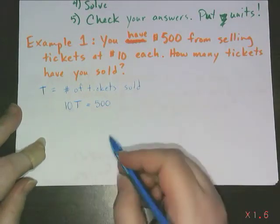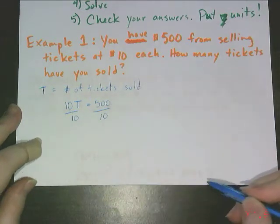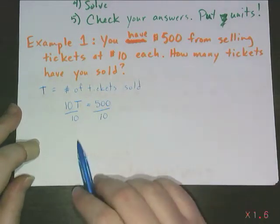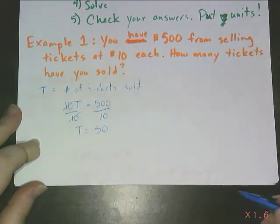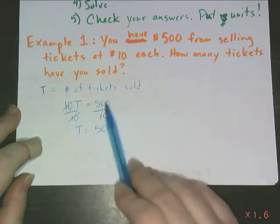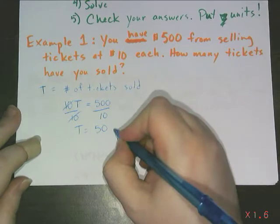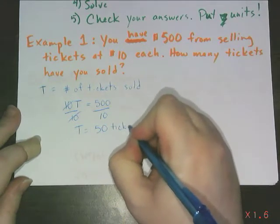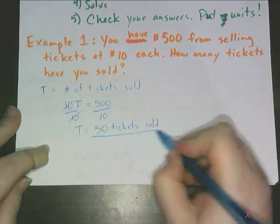10 and T have been multiplied together to undo that. I need the opposite operation of dividing by 10 on both sides. So now I know T equals 50. Check my answers. Let's see if that makes sense. 10 times 50 does equal 500. Do I need units? No, but it would be better to say 50 tickets sold, not measurement units, but units in what I'm talking about.